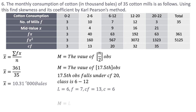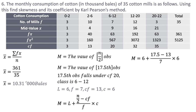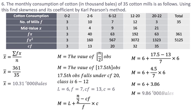Using the median formula L + [(n/2 − cf) / f] × c: 6 + [(17.5 − 13) / 7] × 6 = 6 + [4.5/7] × 6 = 6 + 3.86 = 9.86 thousand bales. Now let's take the fx² value and calculate the standard deviation.